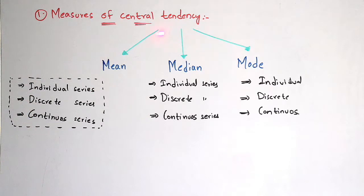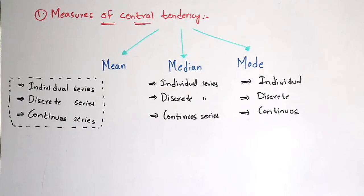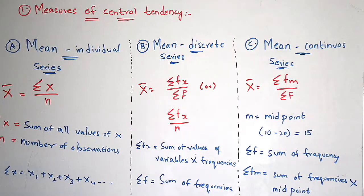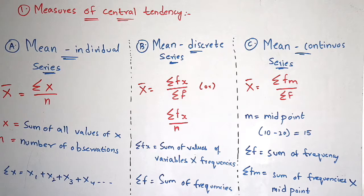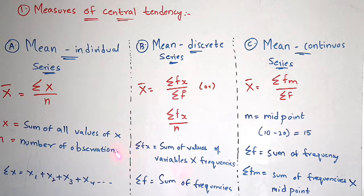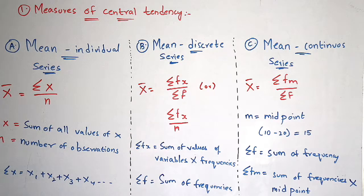First I am going to explain mean — individual series, discrete series, and continuous series — then median, then mode. In this video I am just giving formulas; in further videos I will explain briefly with examples. The formula for mean individual series is: x̄ = Σx / n, where Σ indicates total or sum.